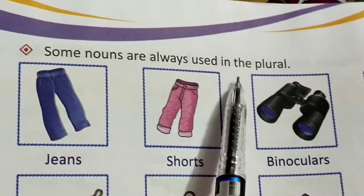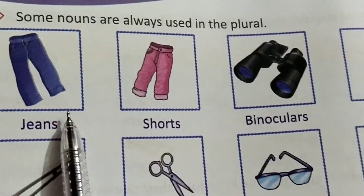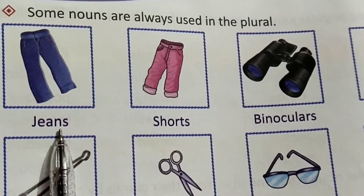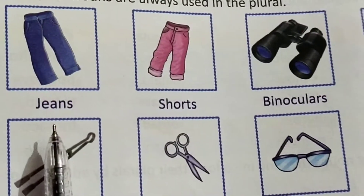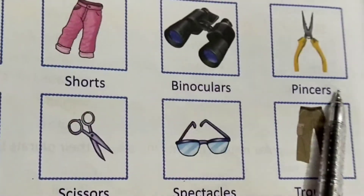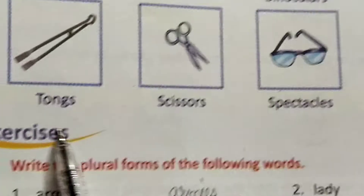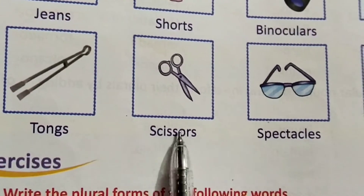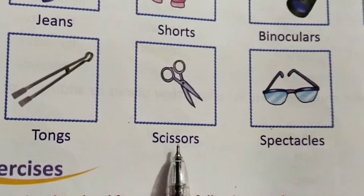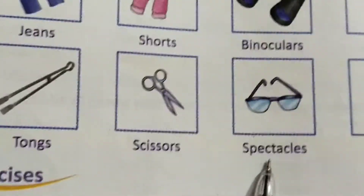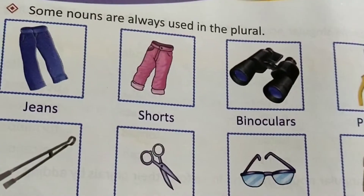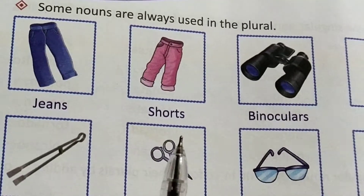Some nouns are always used in plural form. For example: jeans — don't call it 'jean', it's jeans. Shorts, binoculars, pincers, tongs, scissors — don't say 'scissor', it's scissors. Spectacles, trousers — these words are always supposed to be used in plural.